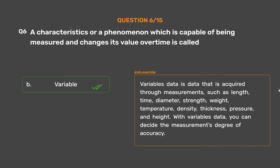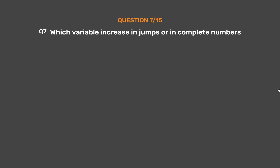Variable data is data that is acquired through measurements, such as length, time, diameter, strength, weight, temperature, density, thickness, pressure, and height. With variable data, you can decide the measurements' degree of accuracy.